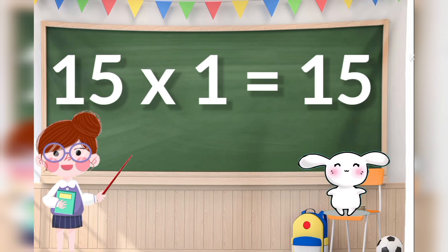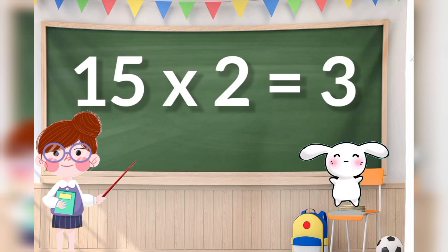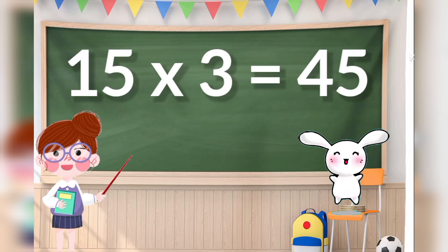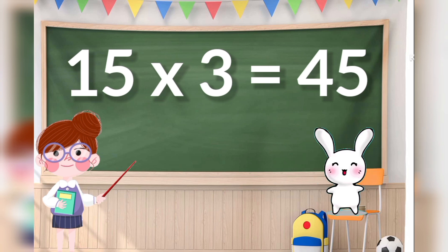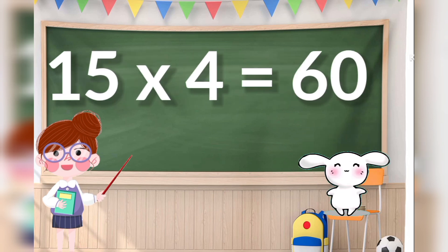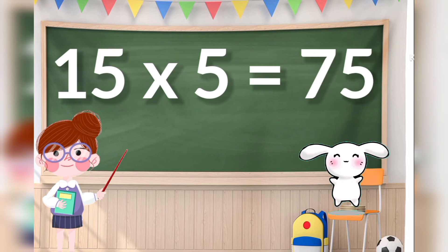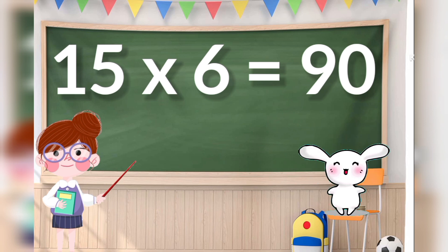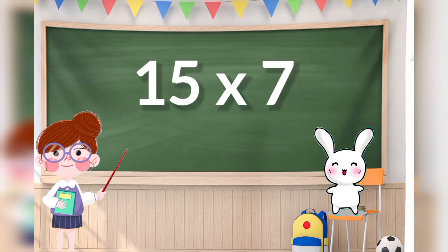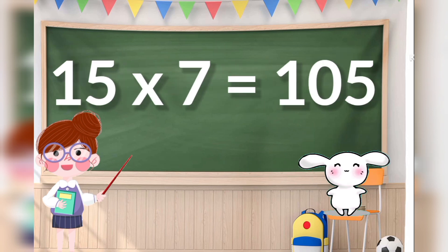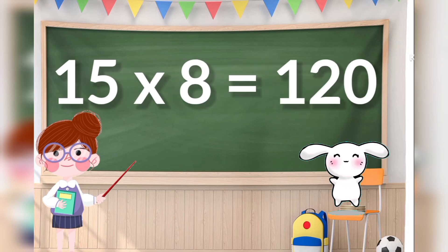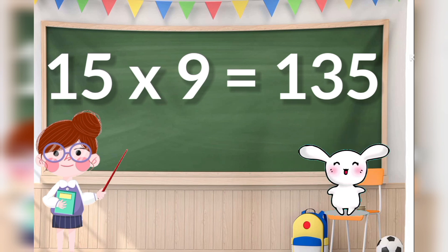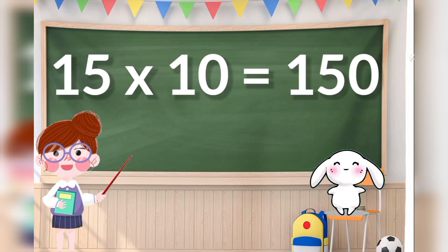15 ones are 15, 15 twos are 30, 15 threes are 45, 15 fours are 60, 15 fives are 75, 15 sixes are 90, 15 sevens are 105, 15 eights are 120, 15 nines are 135, 15 tens are 150.